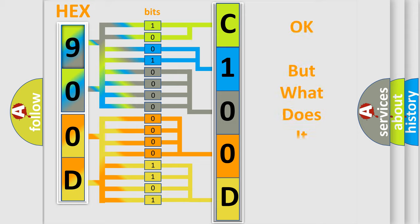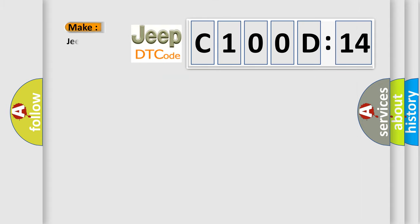The number itself does not make sense to us if we cannot assign information about what it actually expresses. So, what does the Diagnostic Trouble Code C100D14 interpret specifically for Jeep car manufacturers?